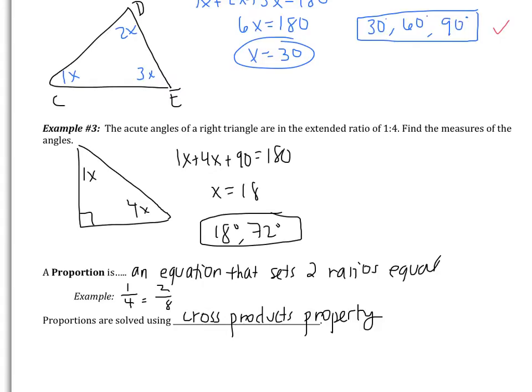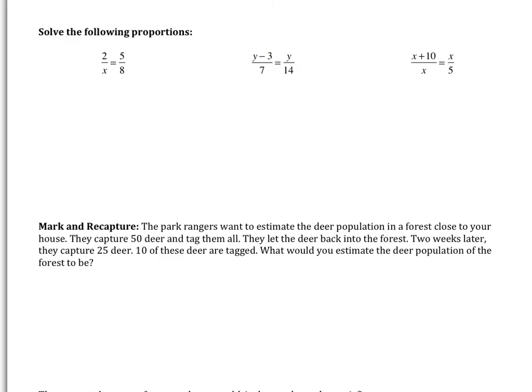Let's jump in and do some examples. It says solve the following proportions. So using the cross-products property, I have 5 multiplied by x, that's 5x, equals 2 multiplied by 8, which is 16. If I divide everything by 5, I get x equals 16 over 5. So x is a fraction, that's fine, and it doesn't reduce anymore, so leave it like that.